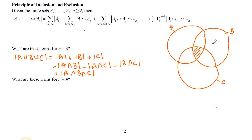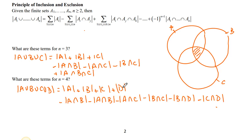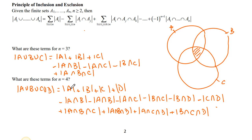Let's see the four-set case. We add all four sets A, B, C, and D. Since including all four creates a lot of overlapping intersections, we subtract all pairwise intersections: A∩B, A∩C, A∩D, B∩C, B∩D, and C∩D. Then we add back all three-way intersections: A∩B∩C, A∩B∩D, A∩C∩D, and B∩C∩D. Finally, we subtract the intersection of all four sets A∩B∩C∩D.